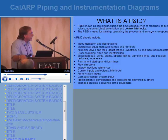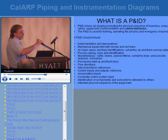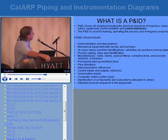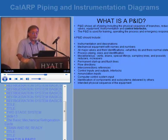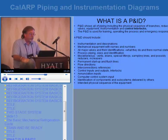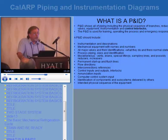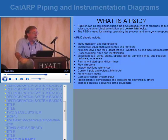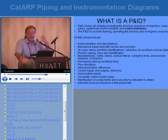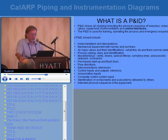So what is a P&ID? P&IDs show all of the piping, including the physical sequence of branches, reducers, valves, equipment, instrumentation, and control interlocks. Where we're lacking in a lot of P&IDs are the interlocks — the safety controls — what a float does, what a solenoid does, the actual controls of the system, because we have both manual and automatic controls in refrigeration. The P&ID is used for training, operating the process, and emergency response.